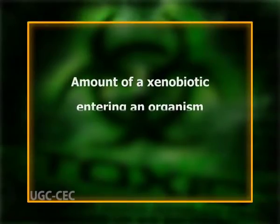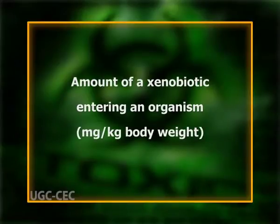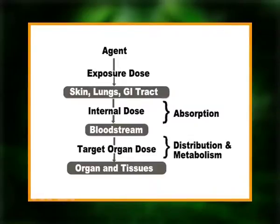Dose is possibly the most important aspect of toxicology, as it is the chief determinant of an adverse effect. The entire science of toxicology has its fundamentals based on toxic effects principally determined by dose. A dose is often expressed as the amount of a xenobiotic entering an organism in units such as milligram per kg body weight. The dose may be expressed in different ways, such as the exposure dose — the amount of xenobiotic encountered in the environment during a certain time period.